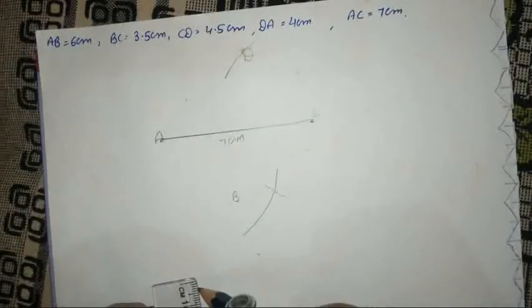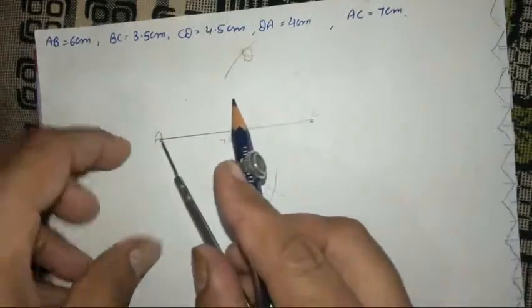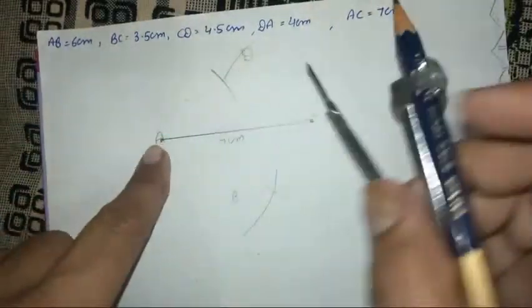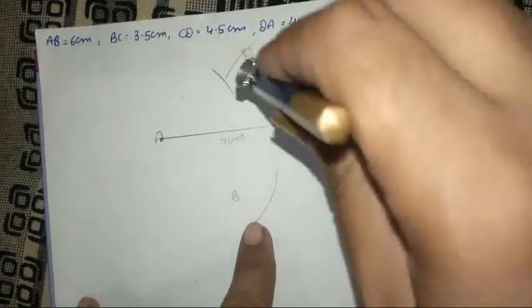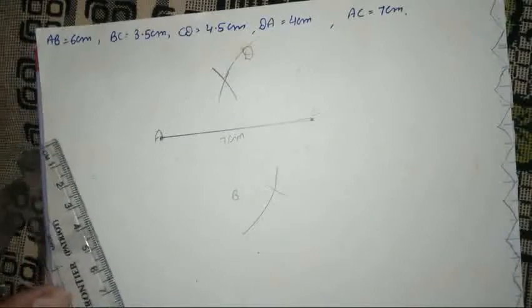After that, DA is given as 4 cm. We open the compass 4 cm, and since it's DA, we place it on A and draw an arc on the D side. If the arc doesn't cut, no problem, we make this arc slightly longer.